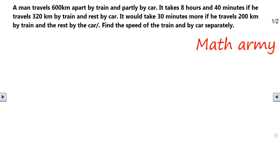Hi friends! Welcome to my channel Math Army. A man travels 600 kilometers partly by train and partly by car. It takes 8 hours and 40 minutes if he travels 300 kilometers by train and the rest by car. It would take 30 minutes more if he travels 200 kilometers by train and the rest by car.